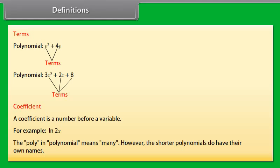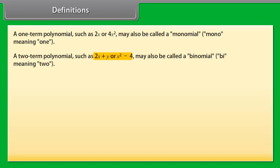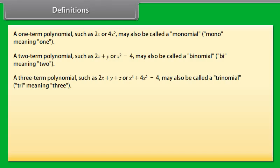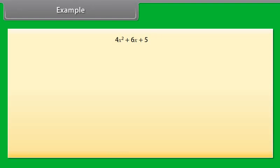Coefficient. A coefficient is a number before a variable. For example, in 2X, the 2 would be the coefficient. The shorter polynomials have their own names: a one-term polynomial such as 2X or 4X square is called a monomial (mono meaning 1); a two-term polynomial such as 2X plus Y is called a binomial (bi meaning 2); a three-term polynomial such as 2X plus Y plus Z is called a trinomial (tri meaning 3).